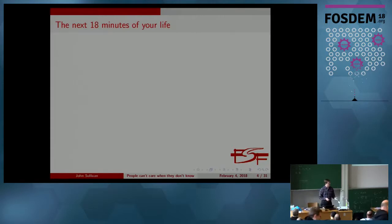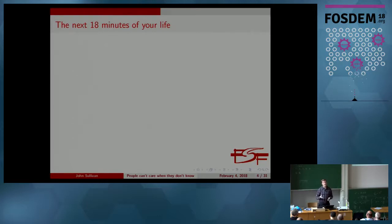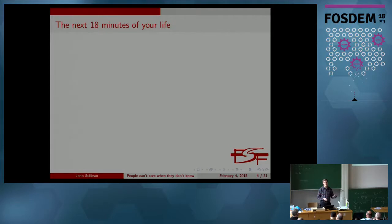A couple of years ago here, I gave a talk on Choosealicense.com, run by GitHub, and highlighted a few of the ways that I thought that site kind of biased users or developers towards particular licenses and didn't describe some of the licenses entirely accurately or fairly. A great dialogue came out of that presentation and GitHub actually made some changes to improve the information on Choosealicense.com. I'm also hoping that if we talk about a few sites in this presentation, some of those sites will maybe also be interested in making some changes.